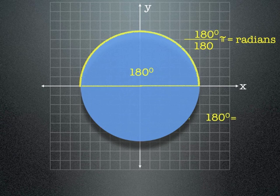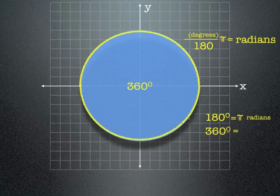So using the formula from above, 180 degrees is equal to pi radians, or 1 pi radians. Now a whole circle is 360 degrees, so it is equal to 2 pi radians, twice as much as 180.